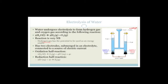The oxidation half reaction is: 2H₂O → O₂ + 4H⁺ + 4e⁻. The reduction half reaction is: 2H⁺ + 2e⁻ → H₂. So you can see that the hydrogens given off in the oxidation half reaction are taken up by the reduction half reaction at the cathode to form hydrogen gas.